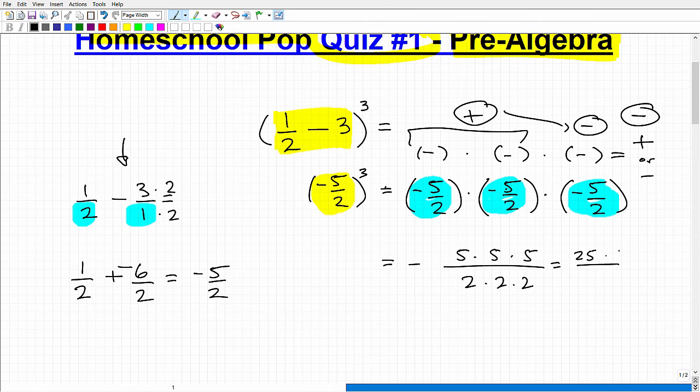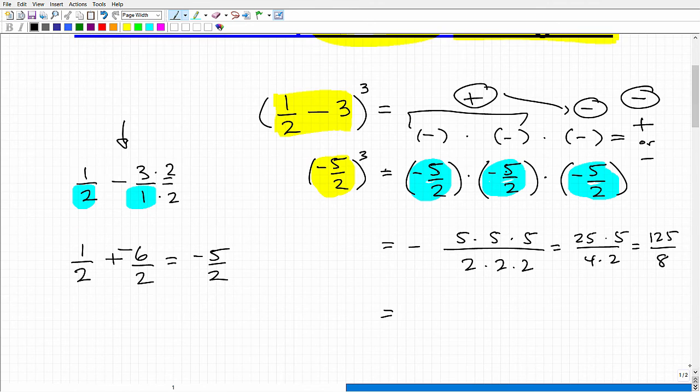That's going to be two times two times two. Five times five is 25 times five, and two times two is four times two. Twenty-five times five is one twenty-five, and four times two is eight. Let's leave our final answer as negative—remember this final answer's sign is going to be negative—negative one twenty-five over eight.